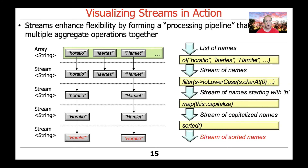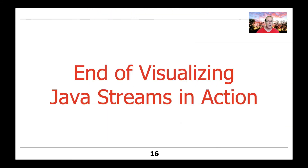So Hamlet now comes before Horatio. Everybody else has been dropped. We've canonicalized the capitalization model and put them in natural sorted order. Hopefully this helps you see literally how things are happening with streams. There's a lot more to the way this works than I've explained here, but this gives you a good starting point. When we talk about other examples later in the course, I will once again use this kind of model to help visualize the processing steps. So that's the end of our simple visualization of Java Streams in action — hopefully that gives you a more holistic gestalt of how streams work.